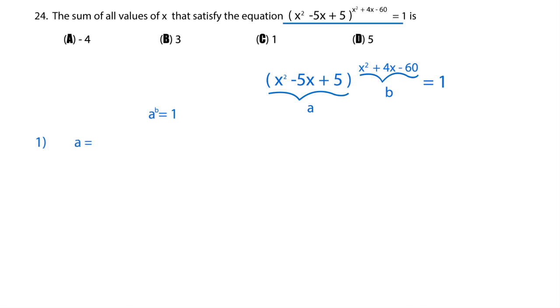Possibility 1 is if a is 1. If a is 1, it doesn't matter what b is, this will be true. It will be 1 to the power of b, and that's always going to be equal to 1. So that's our first possible scenario.